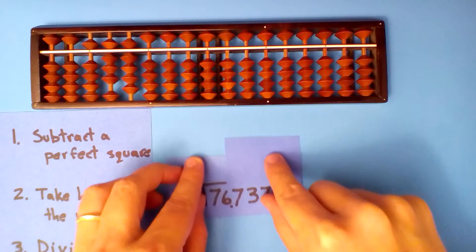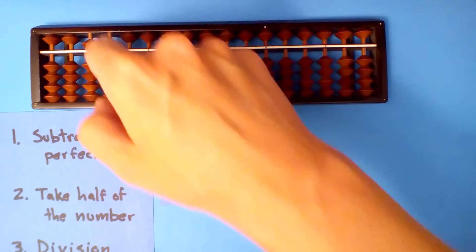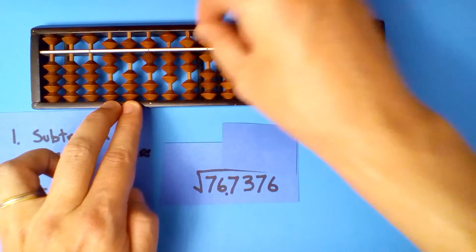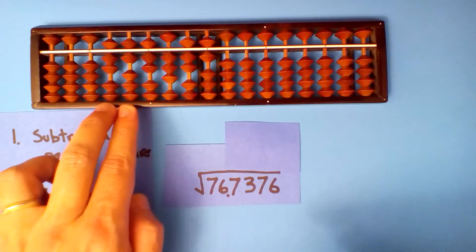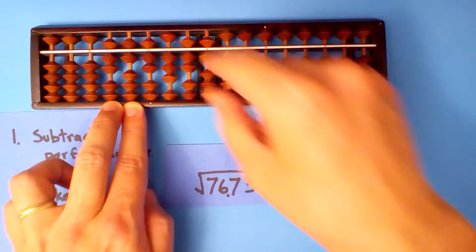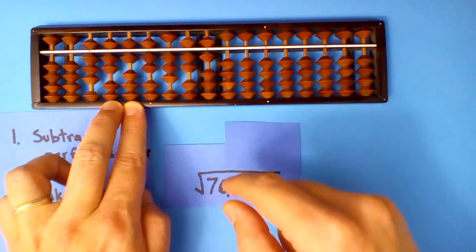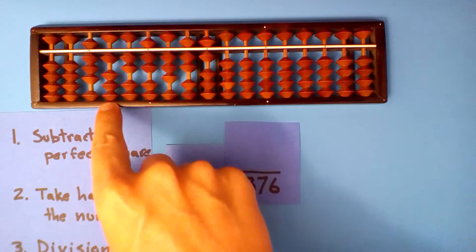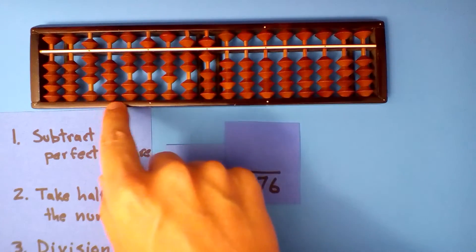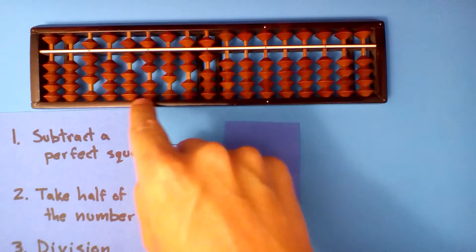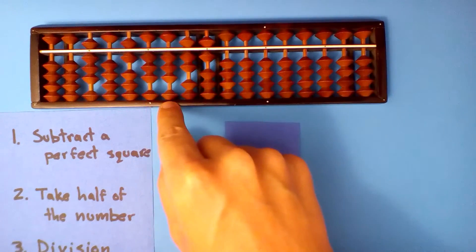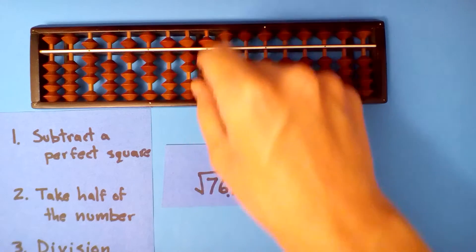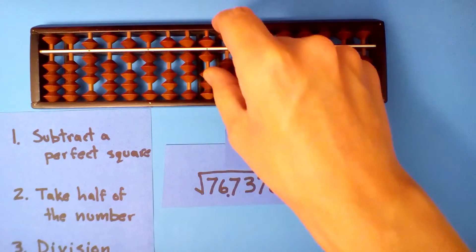The square root of 76.7376. Tens and hundreds: 7, 6, 7, 3, 7, 6. Subtract a perfect square: eight squared is sixty-four, so let's do that. Set up eight and subtract sixty-four. Take half of what's left. Half of 1 is 0 with one left over. Half of 12 is 6. Half of 7 is 3. Half of 13 is 6. Half of 17 is 8. Half of 16 is 8.